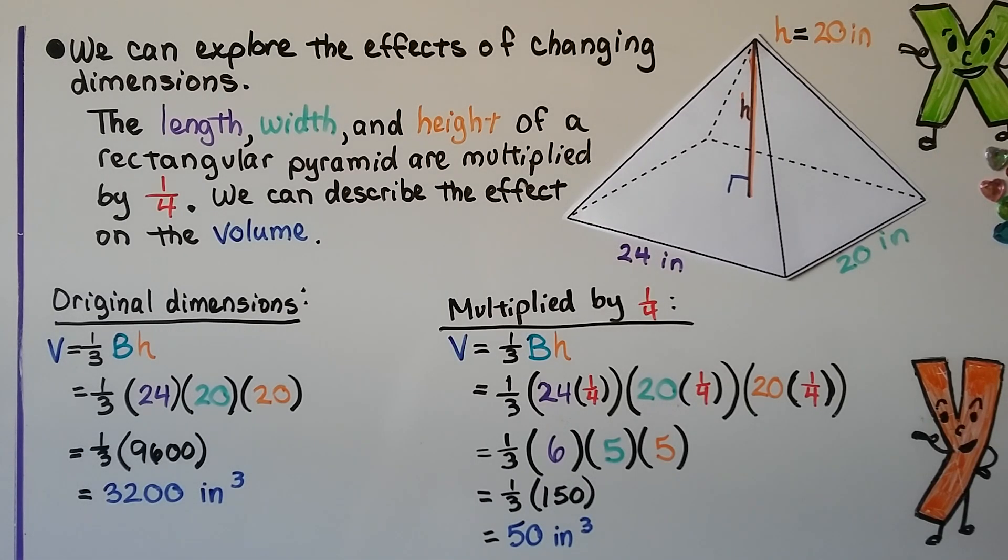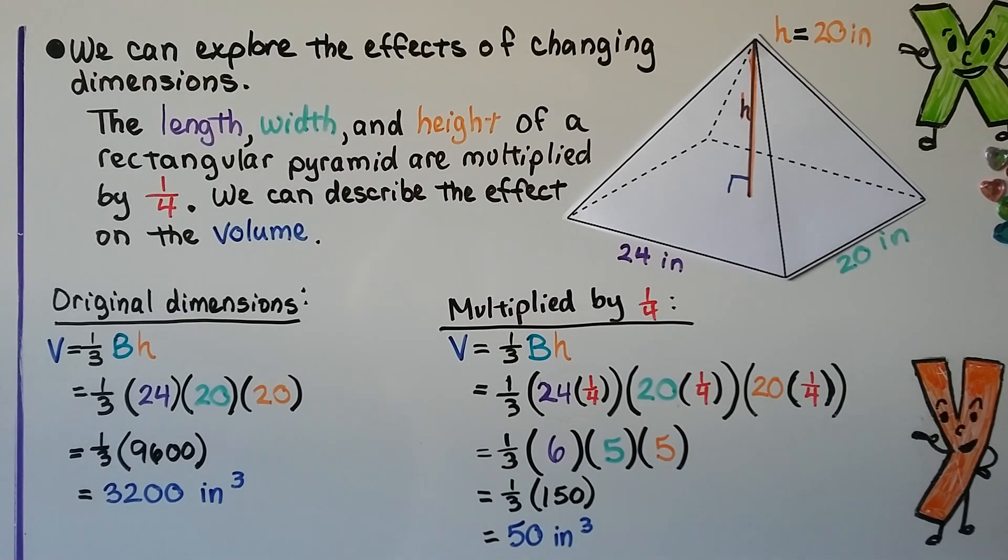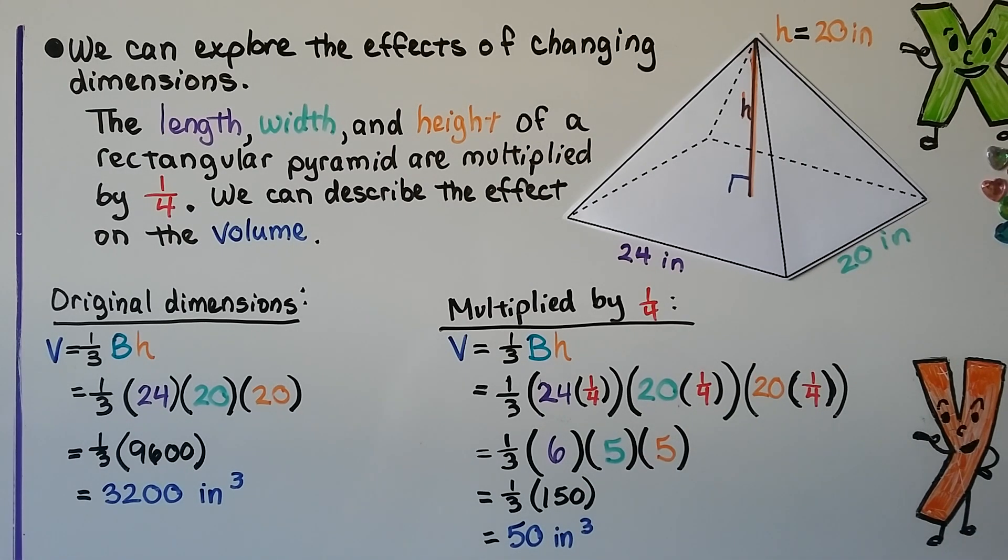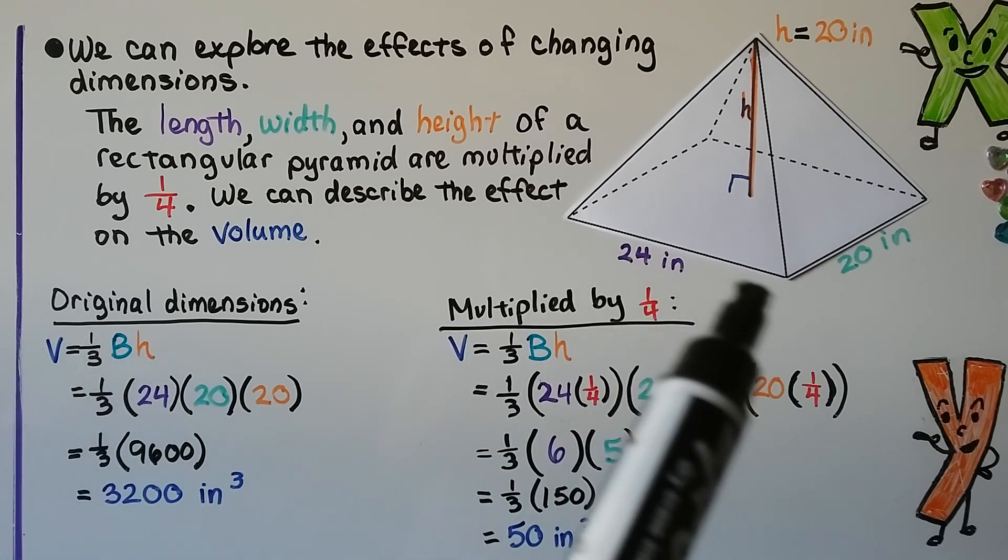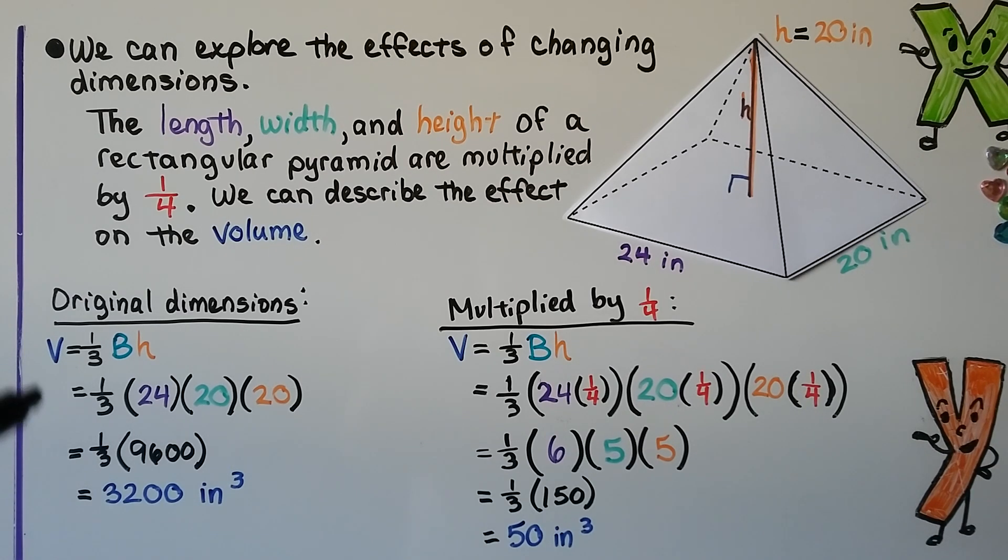We can explore the effects of changing dimensions. The length, width, and height of a rectangular pyramid are multiplied by one-fourth. We can describe the effect on the volume. So our original dimensions, this 24 length, this 20 width, this 20 inch height, we would have a volume of one-third times 24 times 20 times 20, that's one-third times 9600, which is 3200 inches cubed.